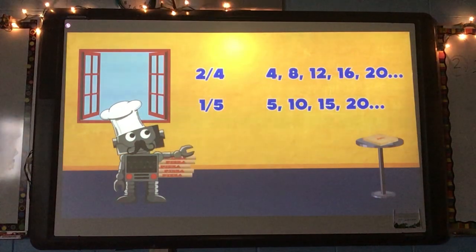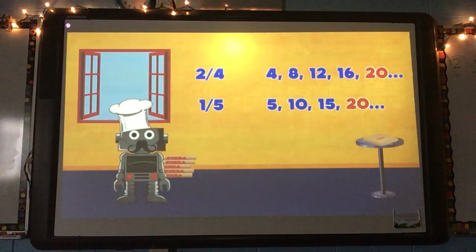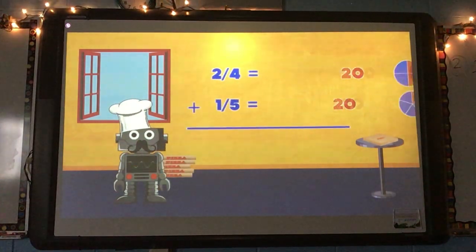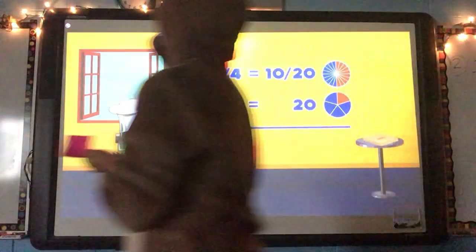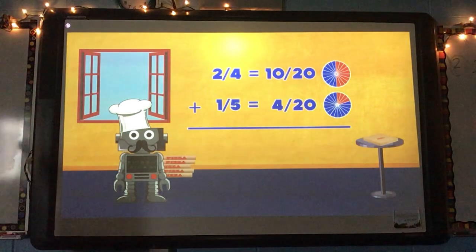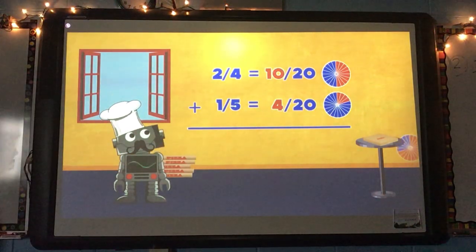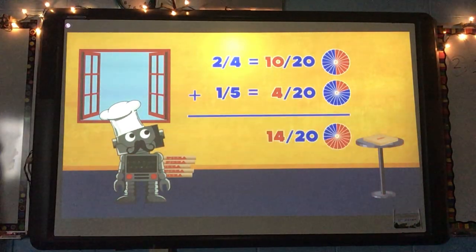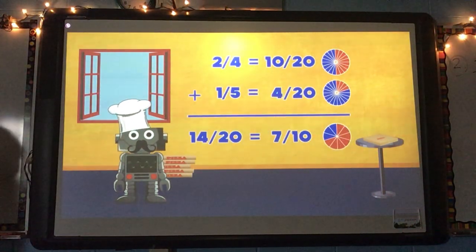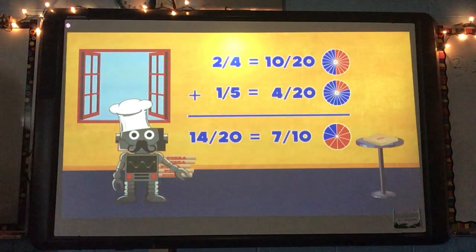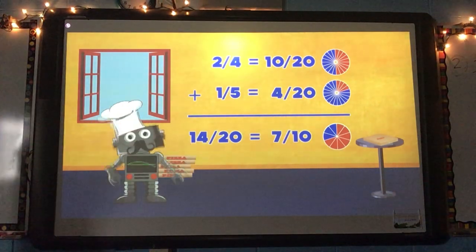Find the least common multiple — that's the first action. Next is finding equivalent fractions. Then do the addition or subtraction. Simplify like an automatic reaction.